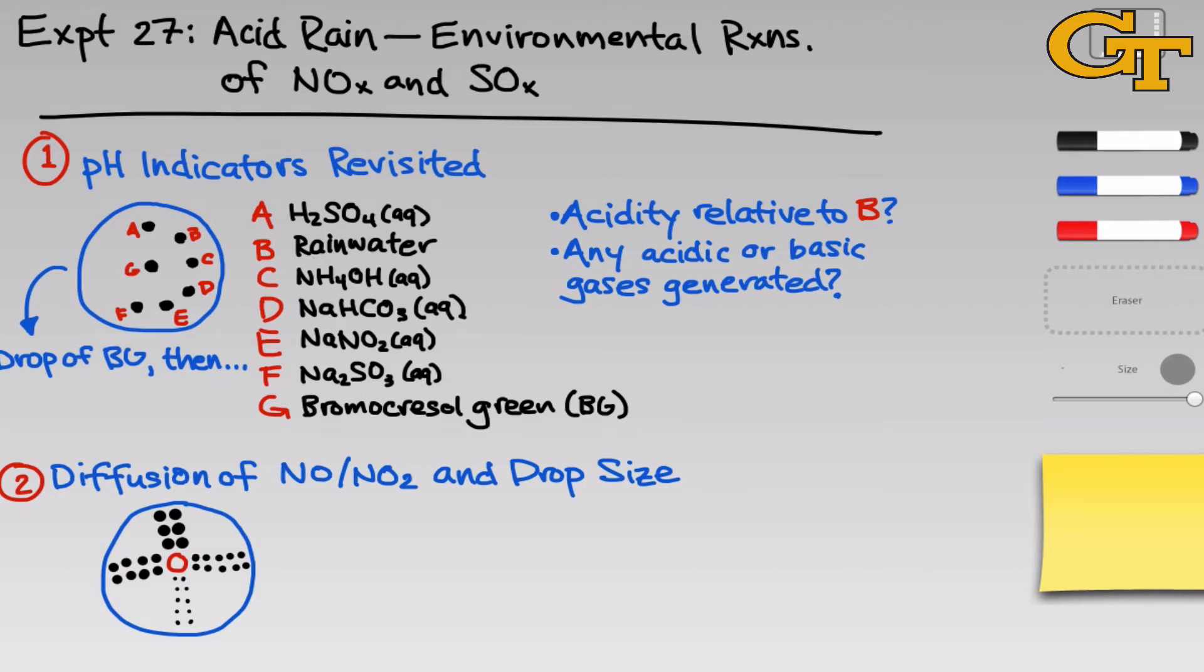So you're going to set up a petri dish in an arrangement something like this, with large, medium-sized, and small drops radiating outward from a central drop, which I've drawn here as a red circle. So the black dots here are rainwater plus bromocresol green, which you'll have in a dropper bottle.